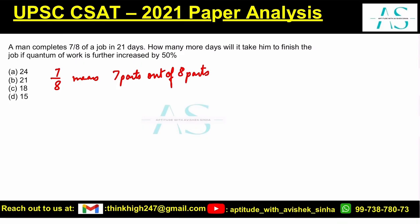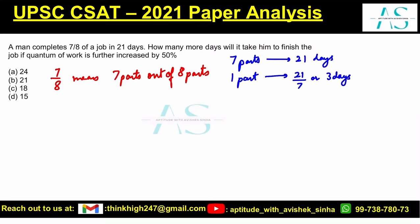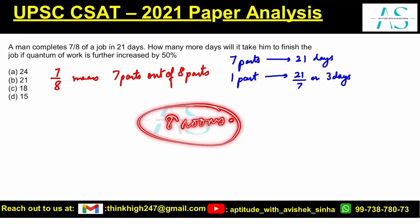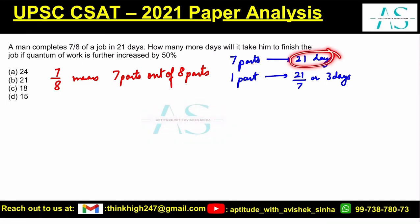7/8 of a job is done in 21 days. So 7 parts of the work is being done in 21 days, which means 1 part must be done in 21/7, or 3 days. If we think of it as 8 rooms to be made — 7 rooms completed in 21 days, so 1 room in 3 days, and 8 rooms would be completed in 24 days.